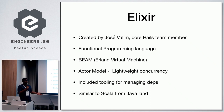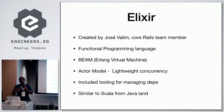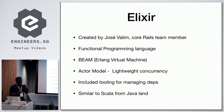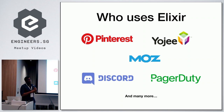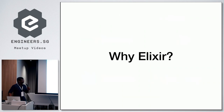Elixir is created by one of the core Rails team members, Jose Valim, as you can see here. It's a functional programming language. Elixir is comparable to Scala from Java Land — it runs in a virtual machine called Beam, whereas Scala runs on JVM. It has a very functional approach, unlike its core inspiration Ruby, since Jose Valim was from the Rails team. There are actually a lot of high-profile companies using Elixir, and you would see that I slipped my company in there as well.